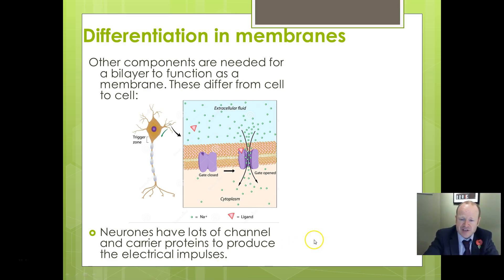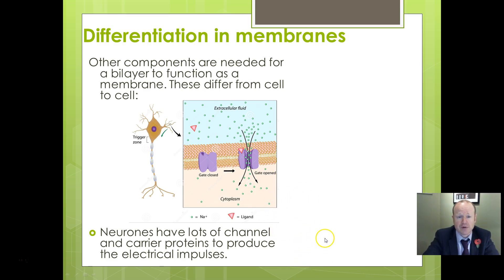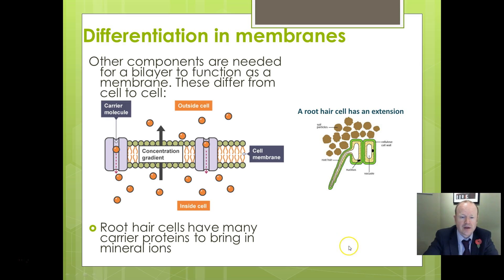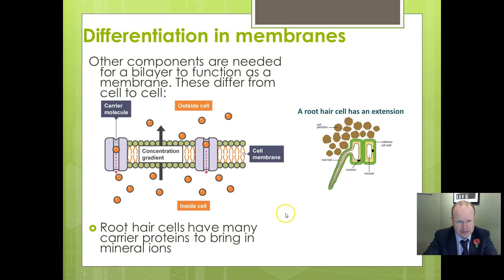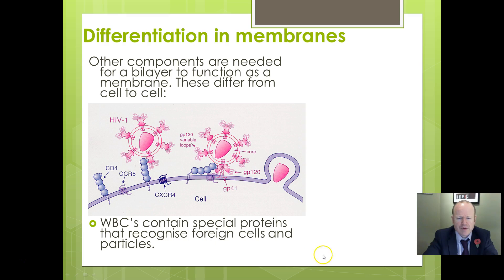Membranes can sometimes be differentiated with different structures depending on cell type. In neurons, for example, there are large numbers of carrier and channel proteins responsible for producing the electrical impulse — the wave of electricity that carries a message from one place to another. In root hair cells, there are lots of carrier proteins because they need to take in mineral ions against their concentration gradient via active transport. Similarly, white blood cells might have specific proteins on their surfaces that recognise foreign invading cells, so they need those adaptations.